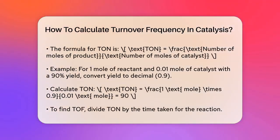The formula for TON is: number of moles of product divided by number of moles of catalyst.